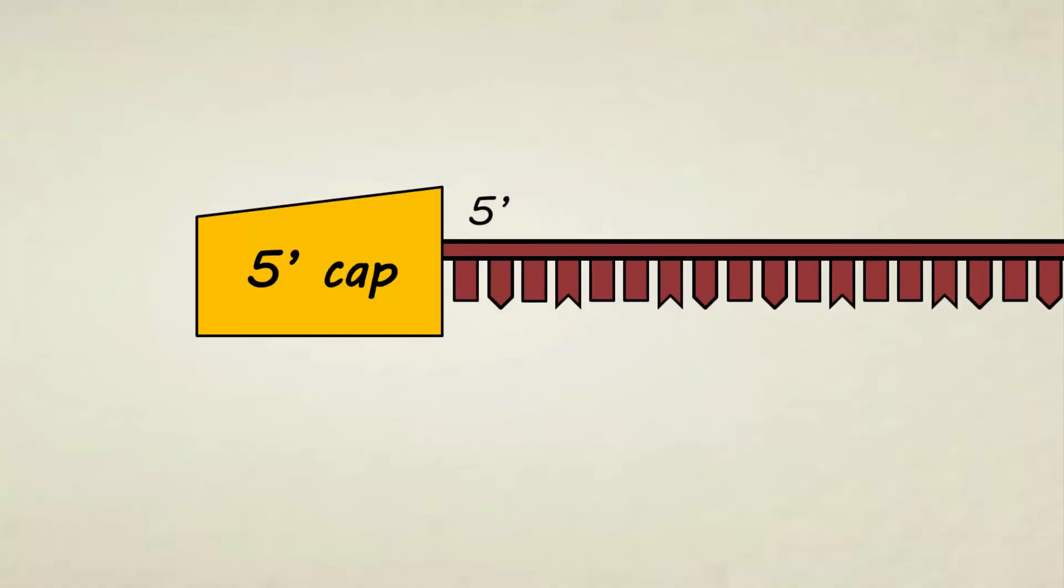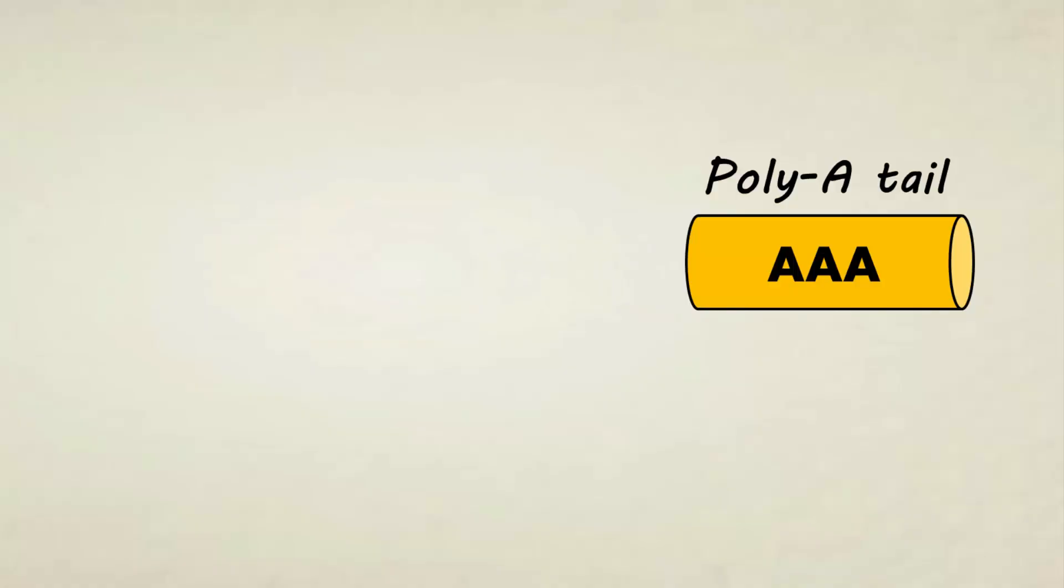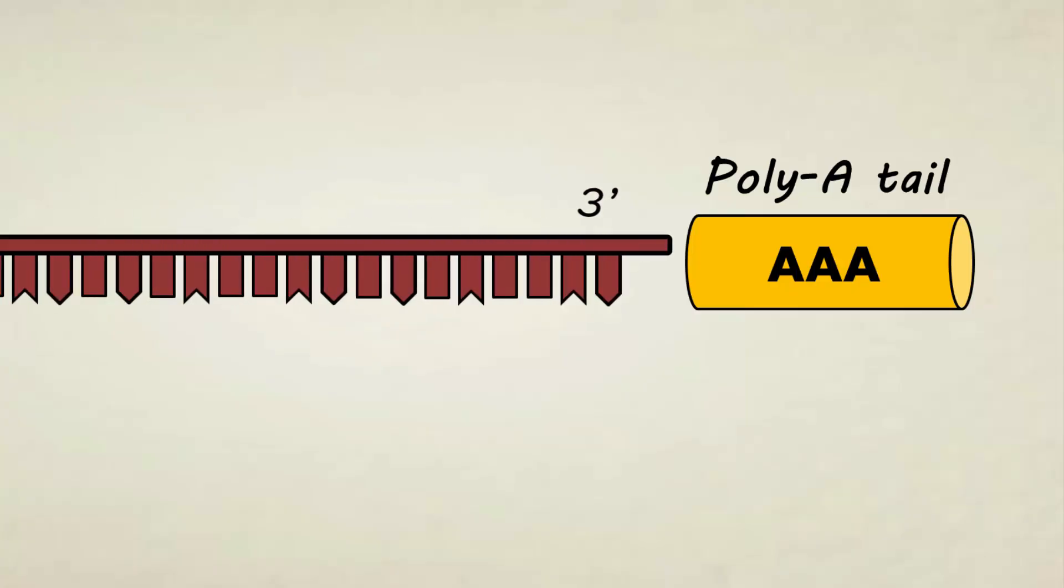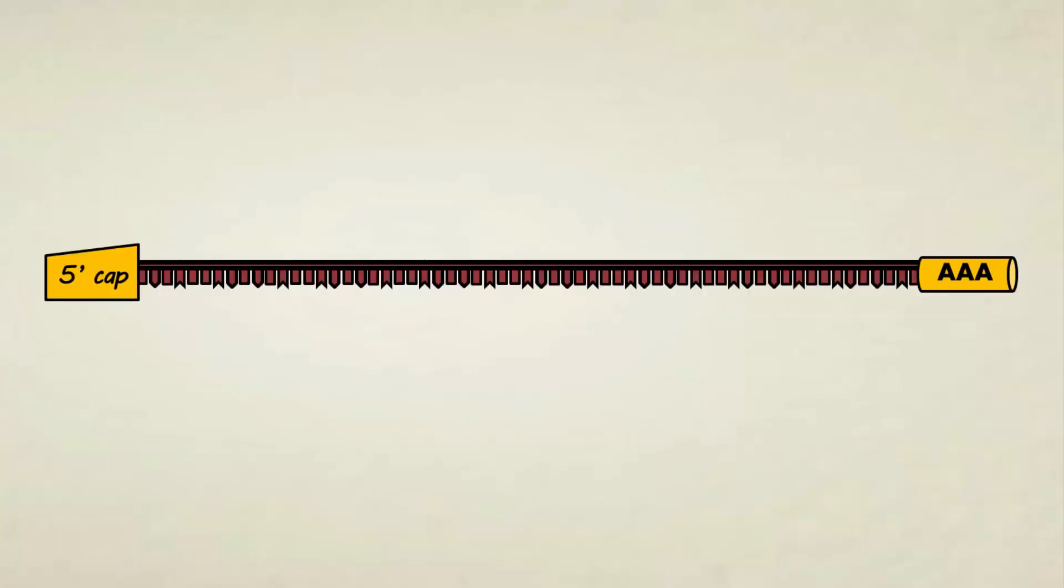And the second one is called poly-A tail. It's just a sequence of repeating adenine base which is about 150 to 250 A in it. This poly-A tail will attach to the 3' end of the mRNA, but it's still not ready for making proteins.